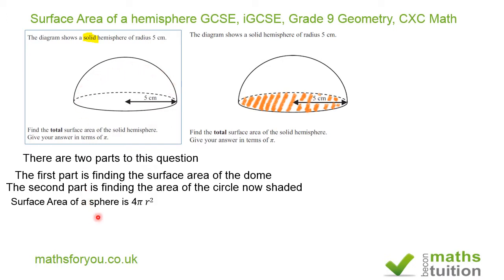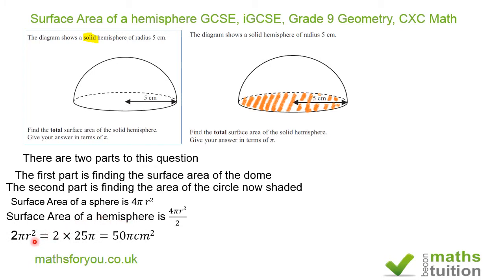The area of a sphere is 4πr². Because we're talking about a hemisphere, we have to halve this. So the surface area of a hemisphere is 4πr² divided by 2. The radius is 5. Substituting 5 into r, we have the surface area of the hemisphere is 2πr², which equals 2 times 25π, giving us 50π centimetres squared.